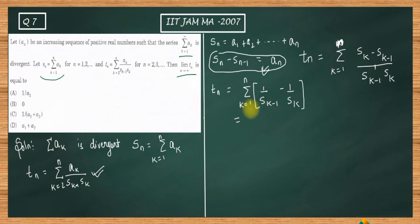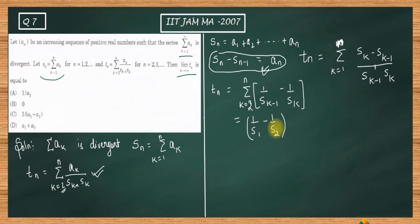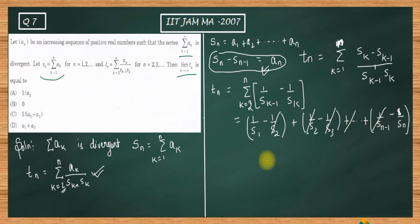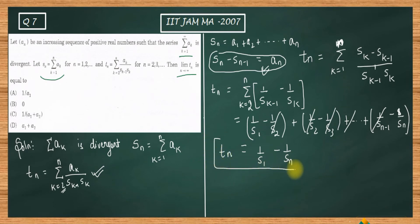Writing out this summation in simple form: (1/s₁ - 1/s₂) + (1/s₂ - 1/s₃) + ... + (1/sₙ₋₁ - 1/sₙ). This is a telescoping series, so s₂ cancels with s₂, s₃ cancels with the next term, and so on, until everything cancels. We are left with tₙ = 1/s₁ - 1/sₙ.